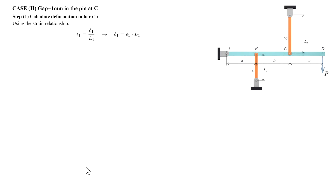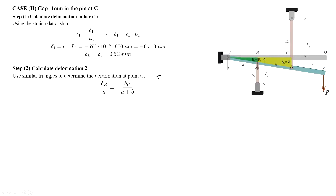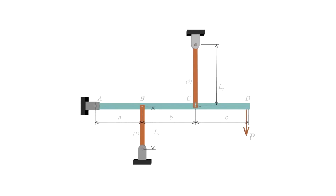For case 2, we look at the differences and similarities. The deformation in element 1 is calculated the same way: delta 1 equals epsilon 1 multiplied by L1. The same similar triangles apply, so delta C comes out the same. The main difference is that the movement of joint C downward is not equal to the deformation in element 2, due to the gap at joint C where element 2 connects to the rigid beam.